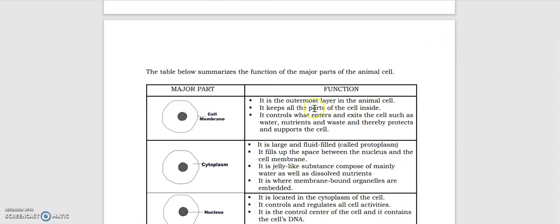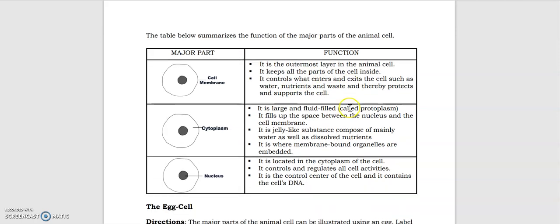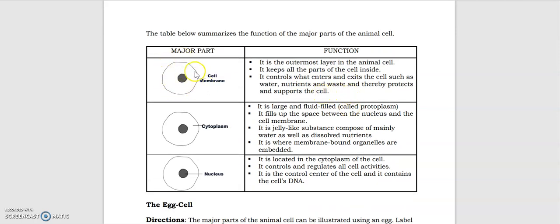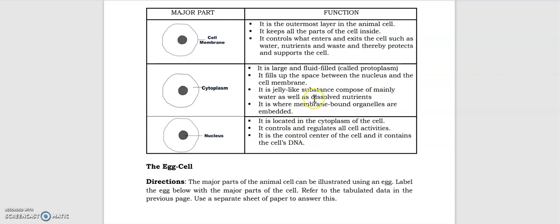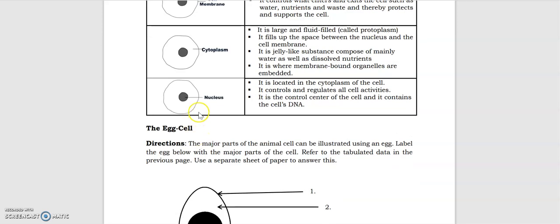Starting with the cell membrane, it's basically the outermost layer in the animal cell. Then we have the cytoplasm, the fluid-filled portion. It fills up the space between the nucleus and the cell membrane. Everything in that space is called cytoplasm. Then we have the nucleus, it's in the center. It regulates the cell activities, the control center of the cell. So basically it's the brain of the cell.